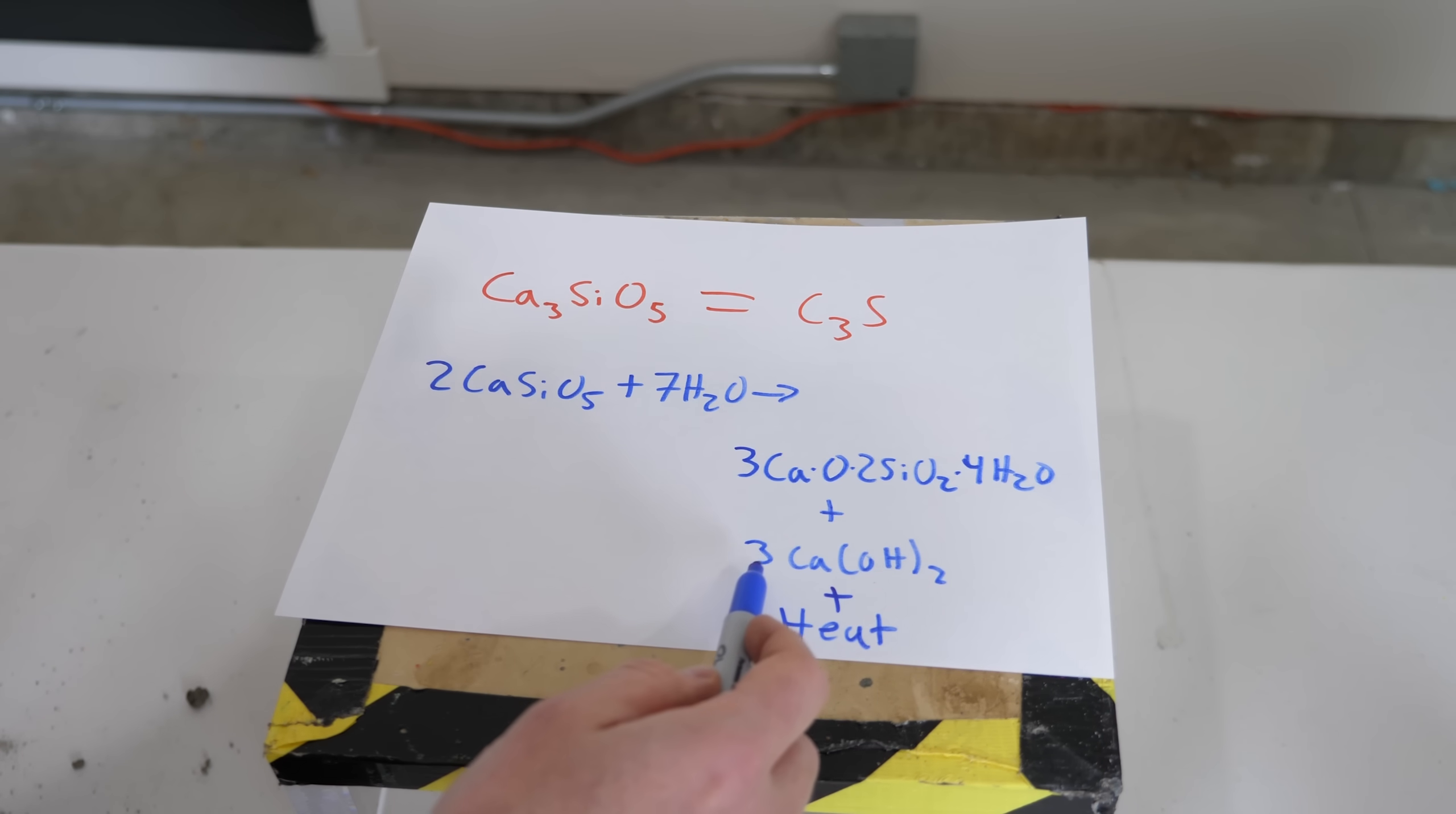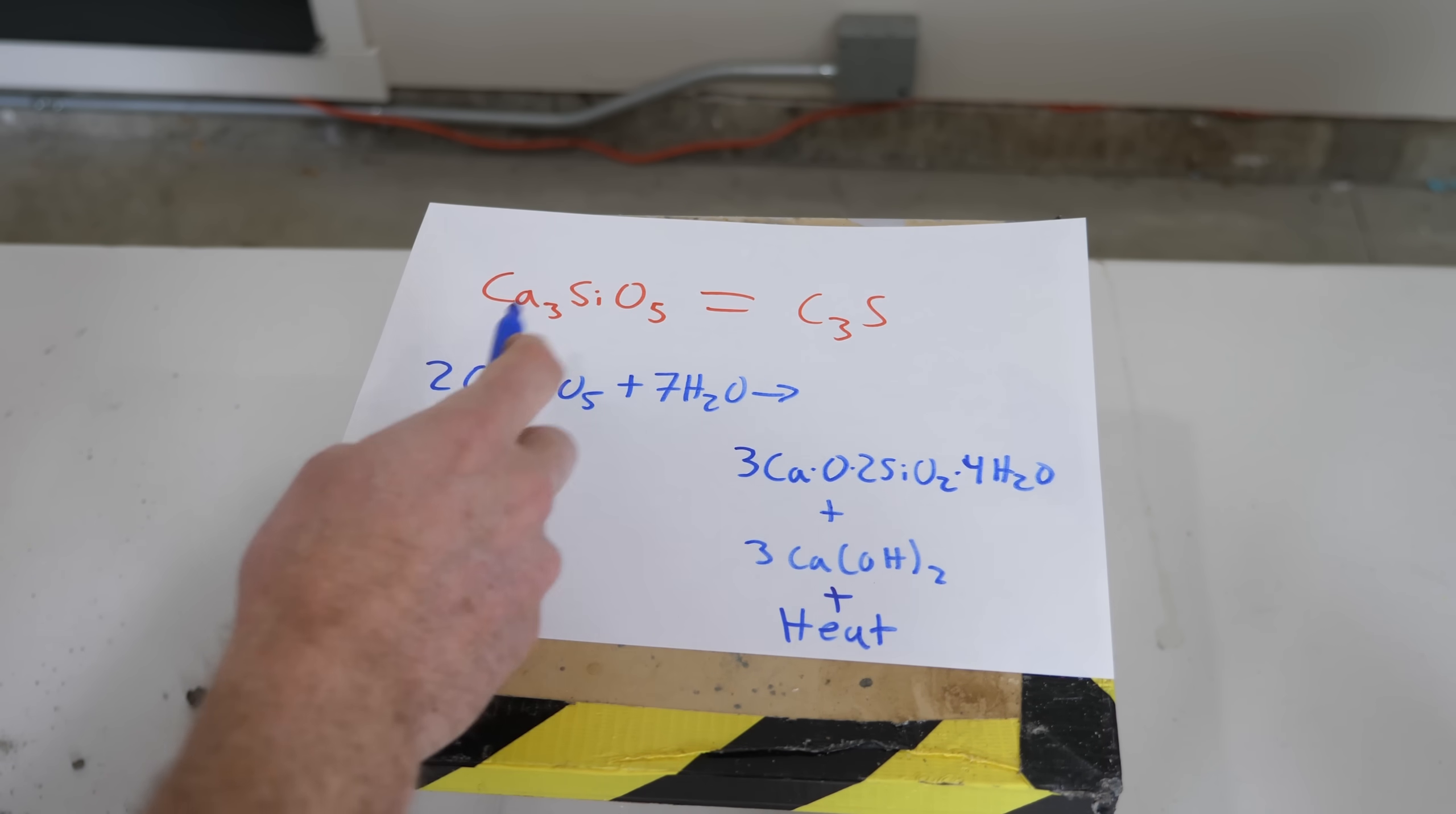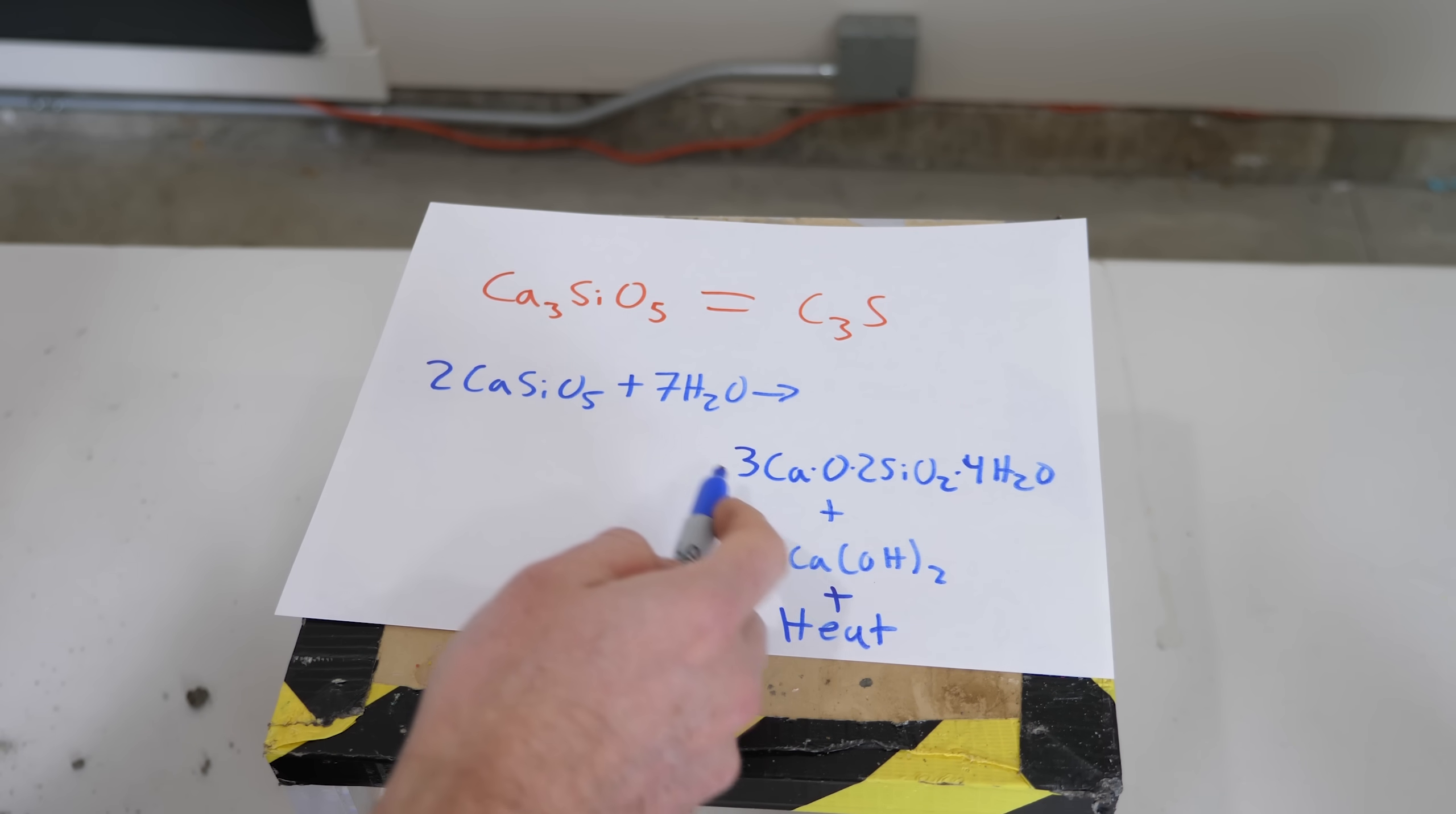So this calcium silicate and calcium hydroxide both begin to crystallize and harden. So as these crystals grow through the cement, it actually makes it harder for the water to react with the tricalcium silicate, and so it kind of slows the reaction down. So the initial reaction is really fast, but then after a while it slows down considerably because this water can't get to it very well.